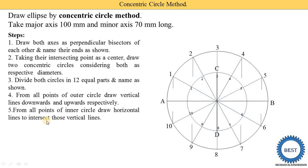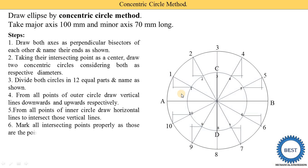Then, from all the points on the inner circle, draw horizontal lines to intersect those vertical lines. The inner circle points are labeled one through ten. From each inner circle point — one, two, four, five, six, seven, nine, and ten — draw horizontal lines out to meet the corresponding vertical lines. This gives us a number of intersecting points on the ellipse.